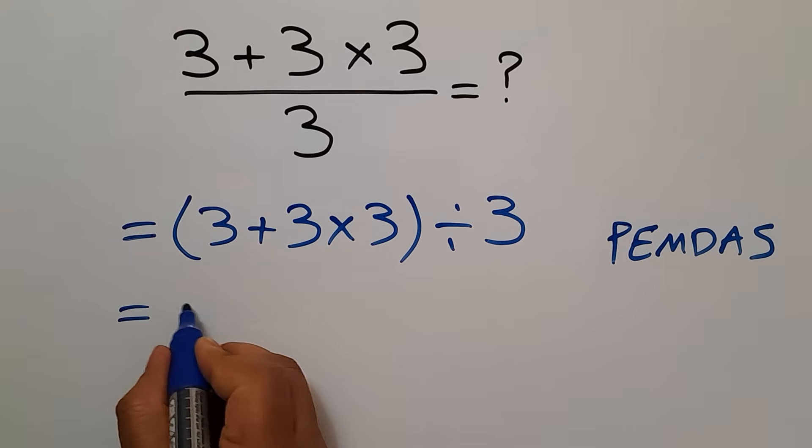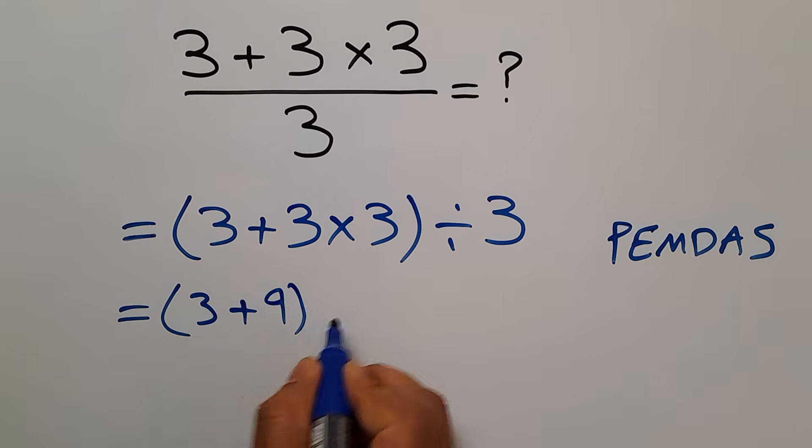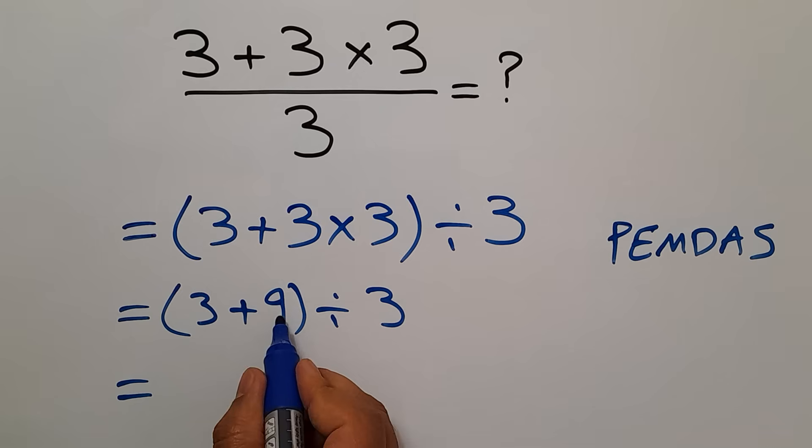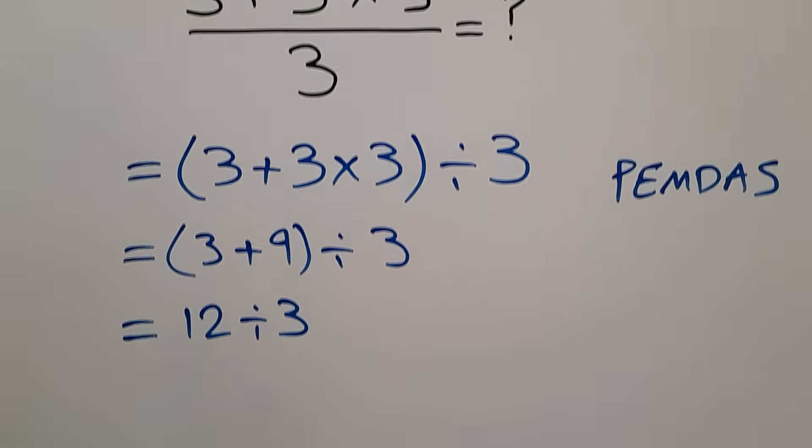So equals inside these parentheses, we have 3 plus 9 then divided by 3. And our expression can be written as 3 plus 9 gives us 12. So 12 divided by 3, and this is equal to 4.